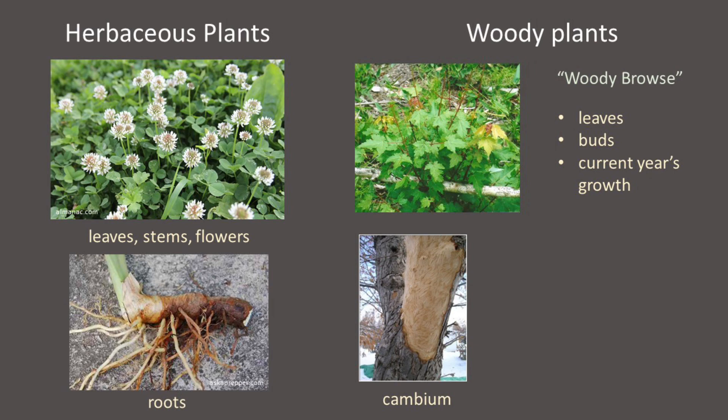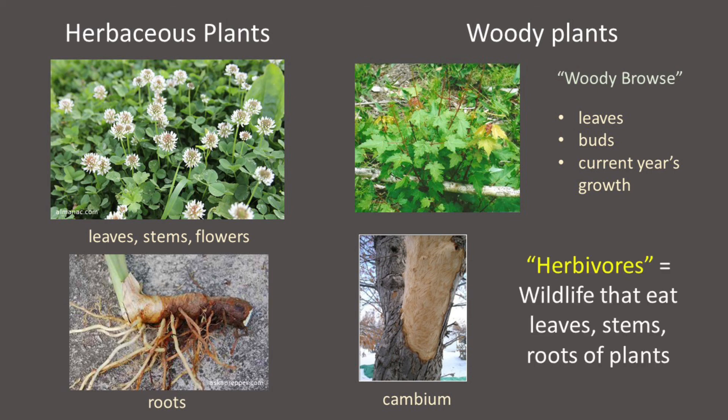Deer, moose, beavers, porcupines, and voles often scrape or chew the bark off trees to eat the intercambium. Wildlife that eat primarily the leaves, stems, and roots of plants are called herbivores.